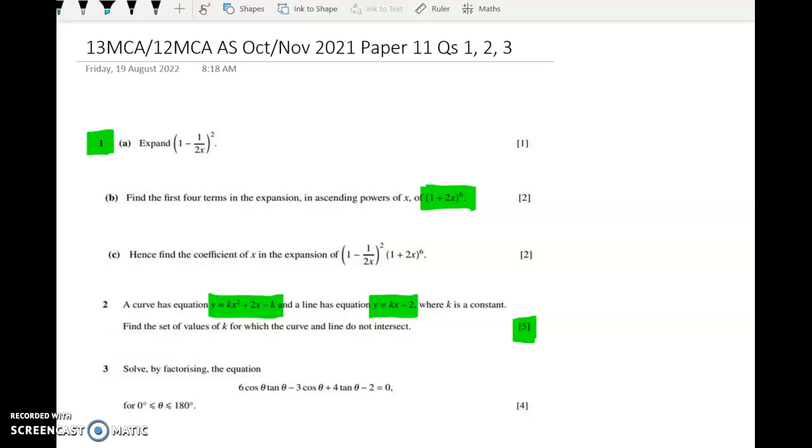And then the last one gives you a big hint about how to solve a trig equation. It says solve by factorizing. And this question is a very generous four marks if you're confident with your factorizing skills. So I should be able to get through all of these in 15 minutes. Let's give it a go.